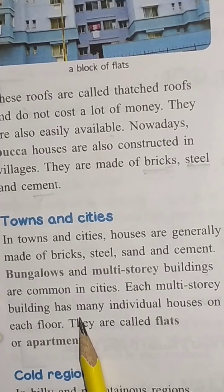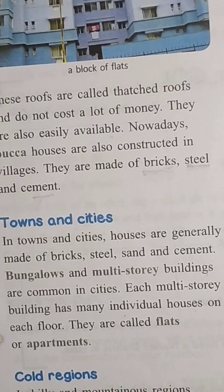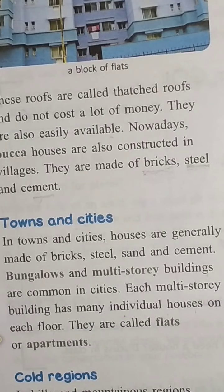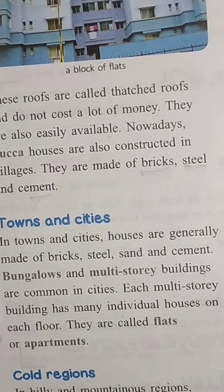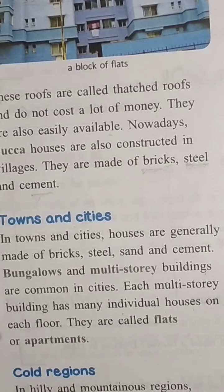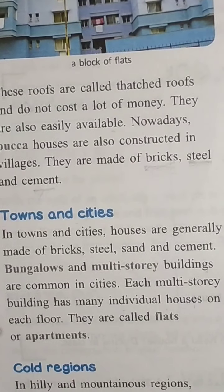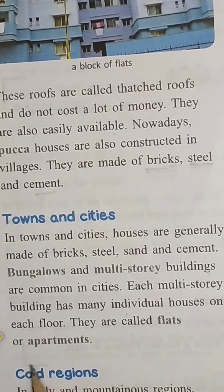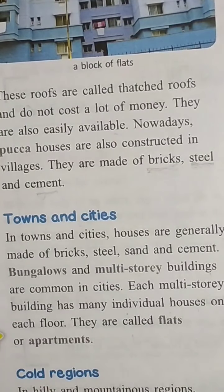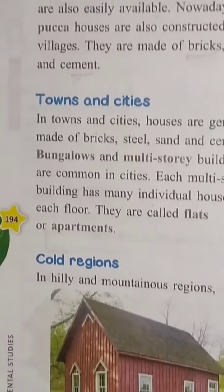Each multi-story building has many individual houses on each floor. Beta, multi-story buildings jo hote hain, har ek individual separate ghar hote hain unke andar — ek ke upar ek ghar. Lekin uske andar bhi alag-alag ghar hote hain. They are called flats or apartments. Is tarah ke floor ko hum flats ya apartments kehte hain.